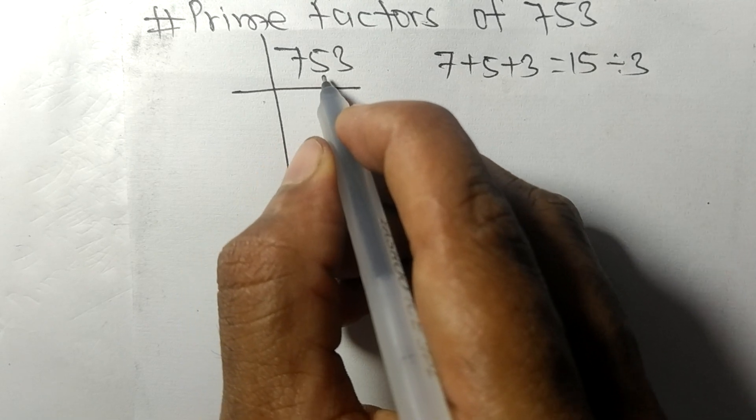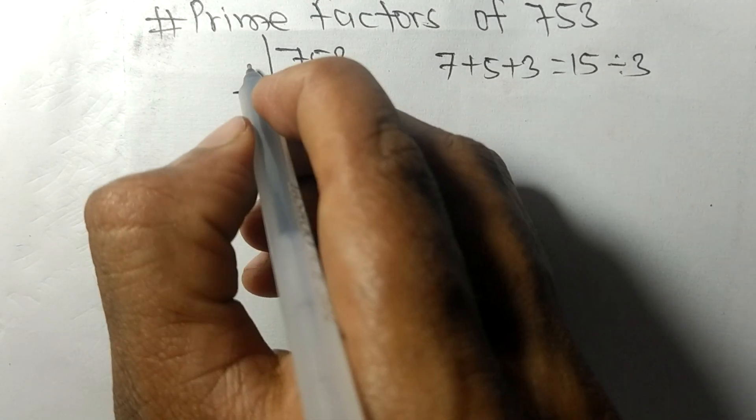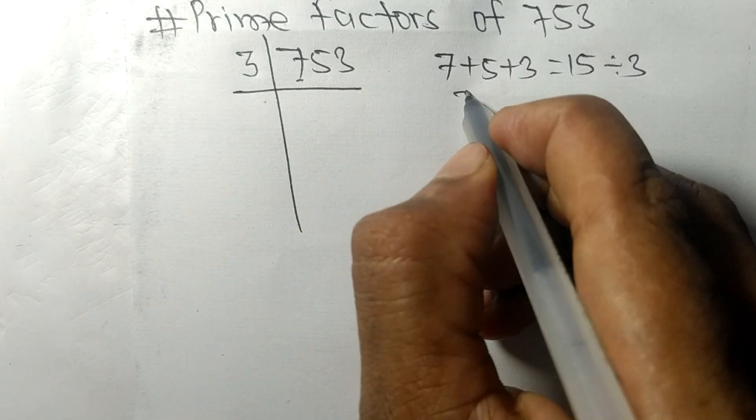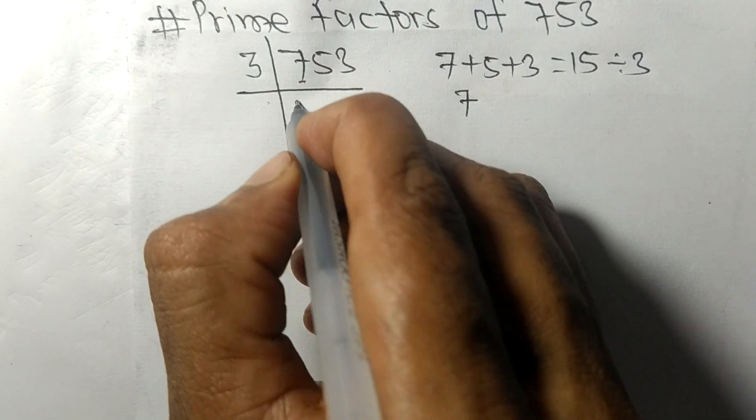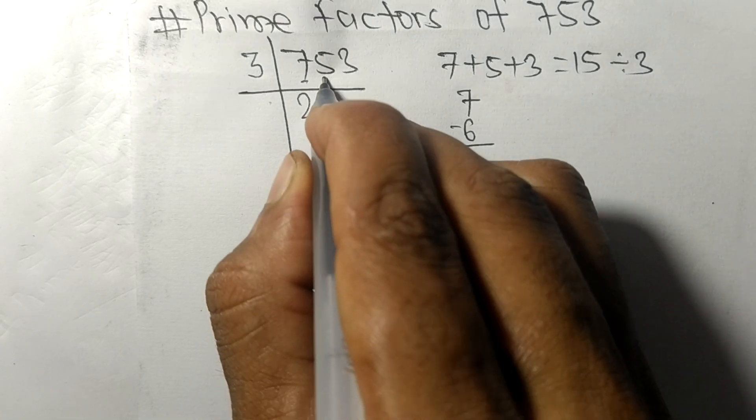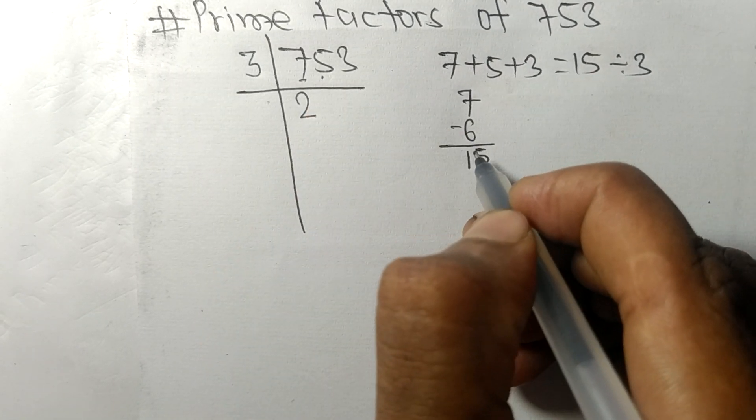So 753 is also divisible by 3. So here we have 7, so 3 times 2 means 6 remainder 1, and this 5, 15.